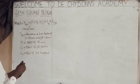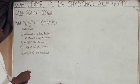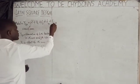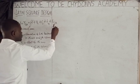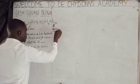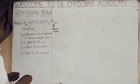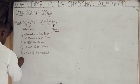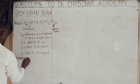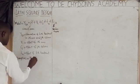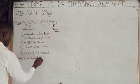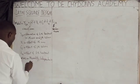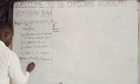This term represents the random error. Like other ANOVA models, there are three assumptions: normality, independence, and constant variance.